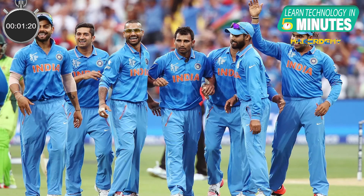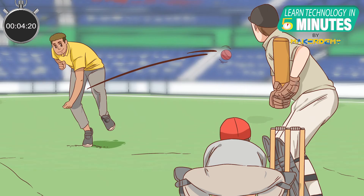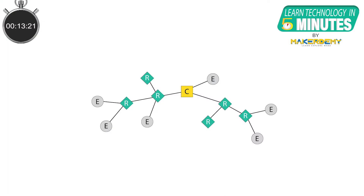A Zigbee network can be thought of as a cricket team. Both are composed of various players and each player specializes in certain types of actions. Without different players, neither can function properly. Of course, Zigbee is not like cricket as there are only 3 kinds of players or device types.